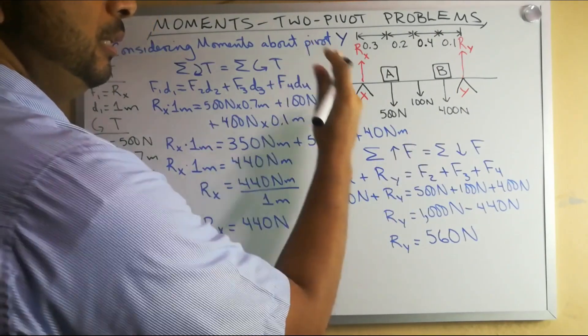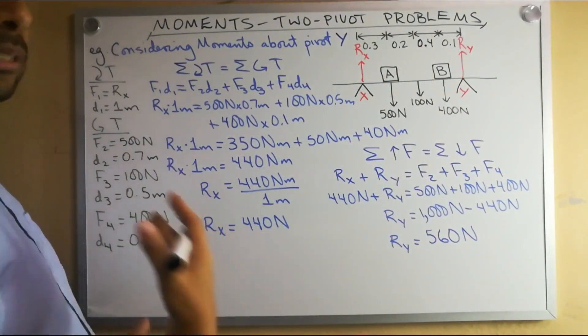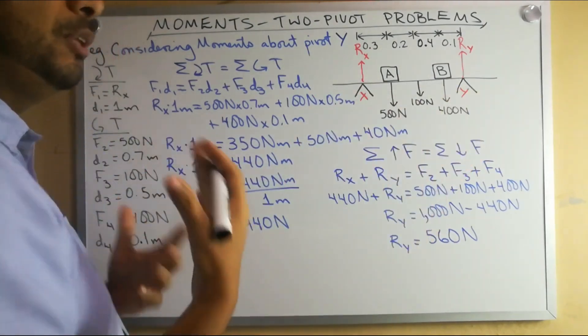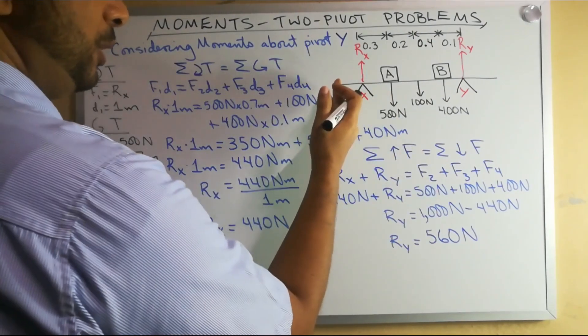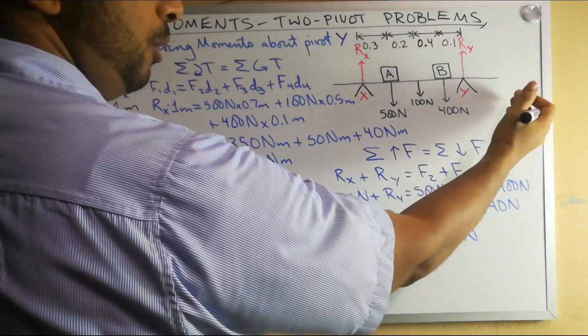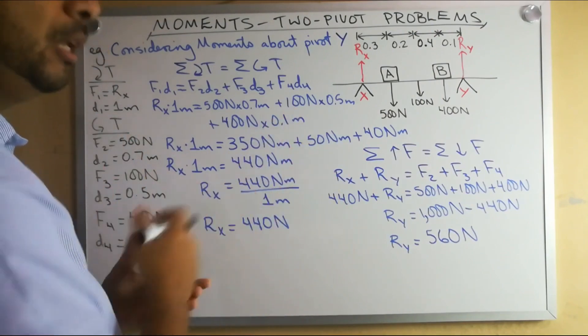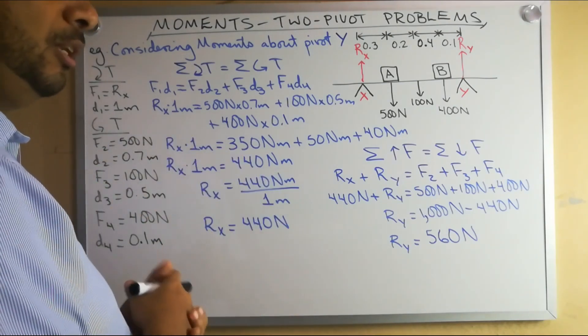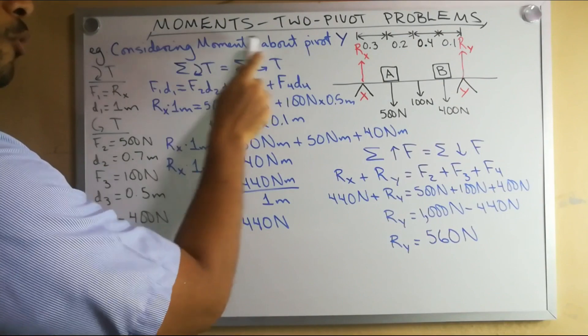How do we then determine these reaction forces R sub X and R sub Y? Well we will use the principle of moments but whenever we have a problem where there are two pivots we have to choose which pivot we want to take moments about. If you push this plank up from here it will rotate about point Y. If you push it on the right hand side instead it would rotate about point X. Since there are two possible rotation points, you have to consider the moments about one pivot. The choice is yours. Here I have chosen to consider moments about the pivot Y.